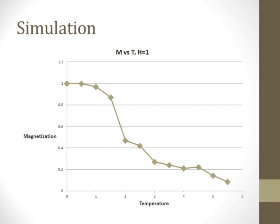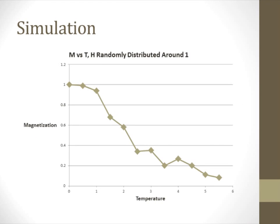Lastly, let's take a look at what happens when we use a random distribution of h values centered around h equals 1. We can see that this looks similar to the h equals 1 case, but the magnetization does not increase quite as sharply. This makes sense since some spins have less incentive to align than in the constant h model. These kinds of random field models are useful because they can help account for fluctuations or impurities in a material.